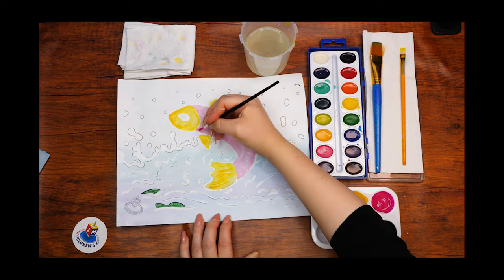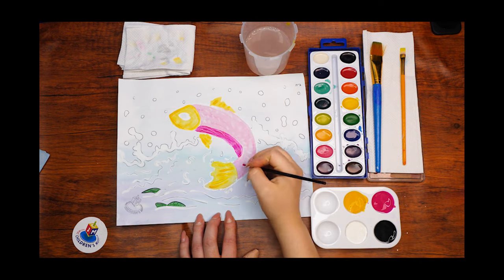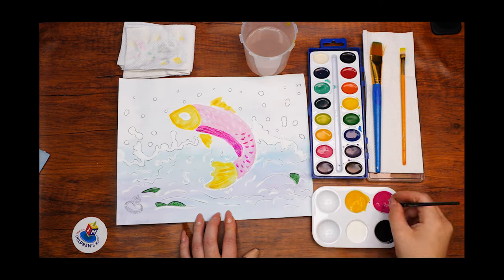Now, using our pink paint, we will add some detail to the fish's body and paint some scales for it. We want our little fish to be a kosher one, which it is now because it has both fins and scales.